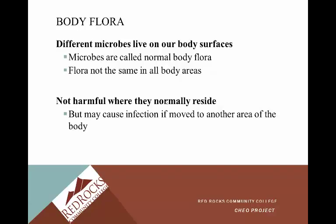Different microbes live on our body surfaces and are called normal body flora. Flora are not the same in all body areas, and this is really important to remember. Flora are important in the areas in which they normally reside. But if flora from the intestinal tract gets placed somewhere outside of the intestinal tract, it can then be pathogenic. Normal flora have to reside in the part of the body where they should be — they're not harmful where they normally reside, but they may cause infection if moved to another area.